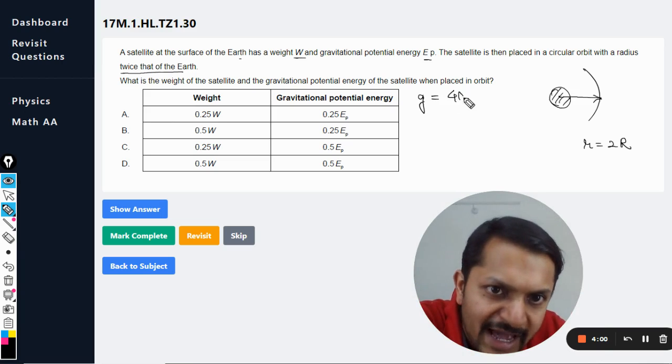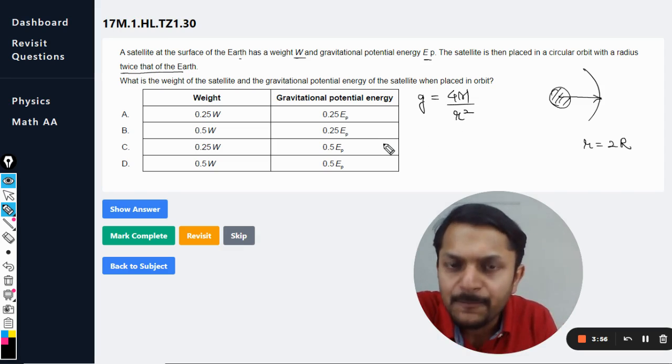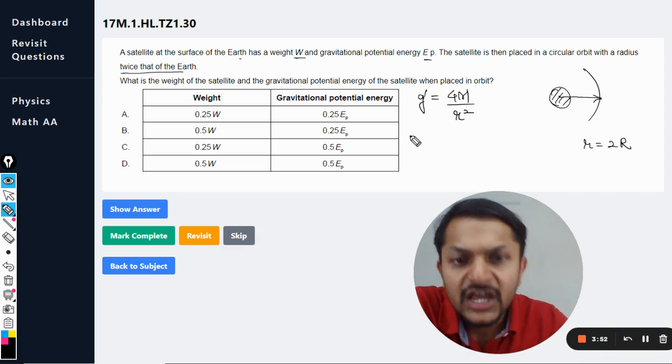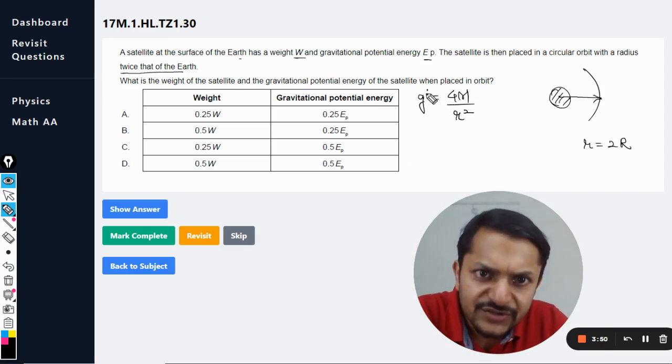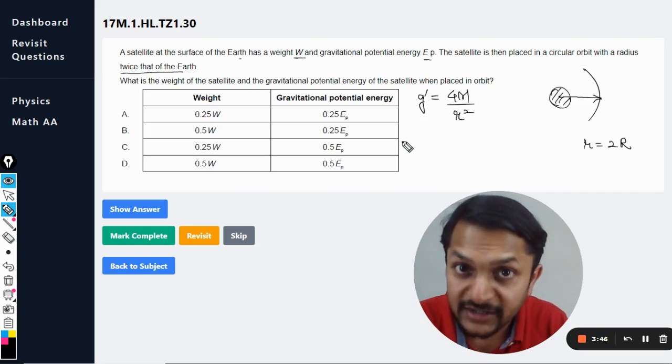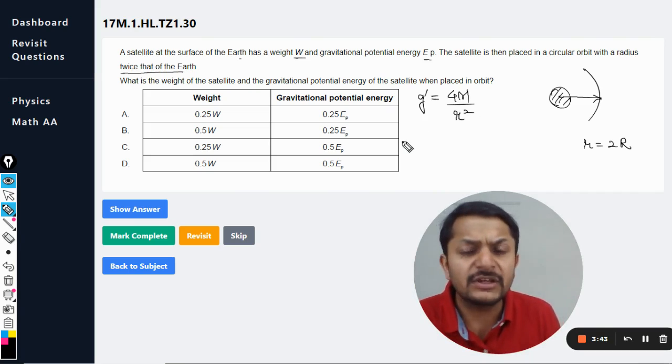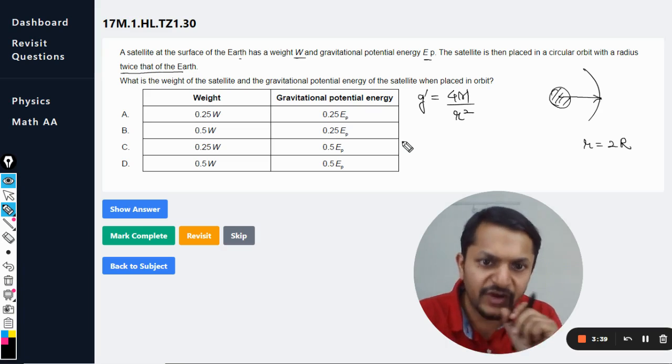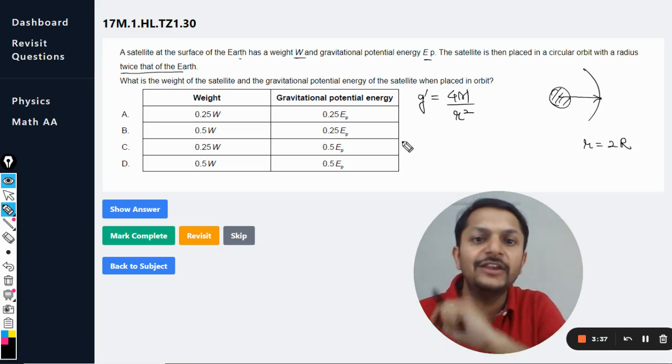So g is given as GM divided by r square. This is the formula with the help of which we are going to find this g. I'm going to write it as g dash rather than g because this is definitely not 9.8. It would be having some other value like 4.5 or something, but it is the same thing. 4.5 meter per second square.